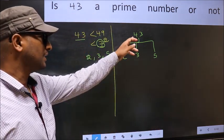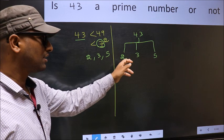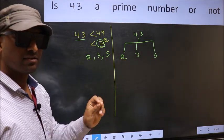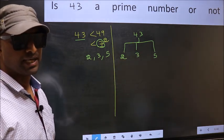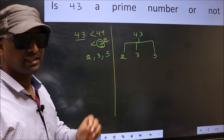If 43 is divisible by any one of these numbers, we say it is not prime. Otherwise, it is prime.